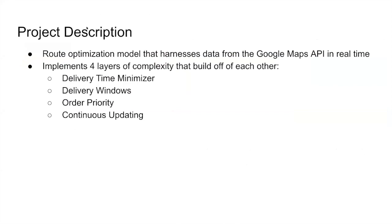To give you a brief overview of what we were tasked with: our project involved creating a route optimization model to harness data from the Google Maps API in real time. Given several constraints, as you can see below, we determine the most optimal route for Cardinal Health's trucks, accounting for continuous updating, order priority, delivery windows, and delivery time minimization.